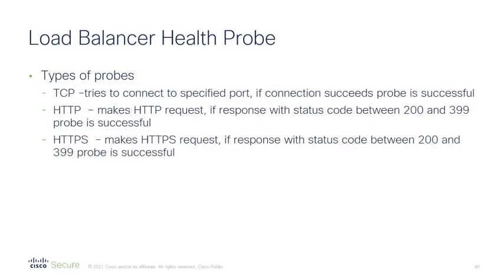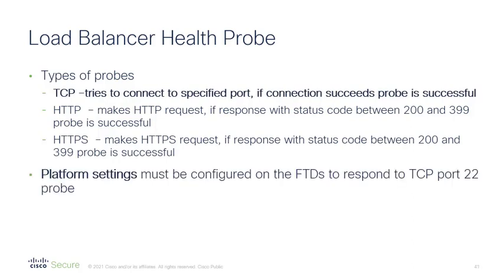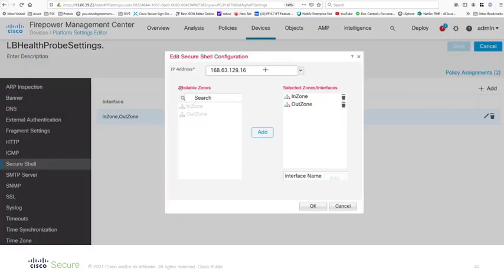A remark about health probes: the load balancers — both internal and external — are keeping track of the health of the firewalls using either TCP, HTTP, or HTTPS. We recommend TCP probes on port 22, because you can configure the firewalls to respond to connections on data interfaces on port 22. This is a platform setting on the firewall. Here you see the screen in the Firepower Management Center, or FMC — a very simple configuration of secure shell access for the data interfaces.